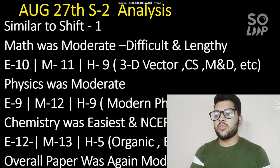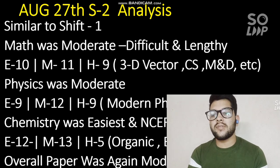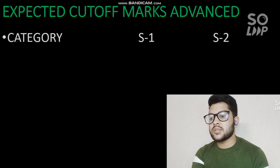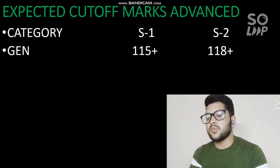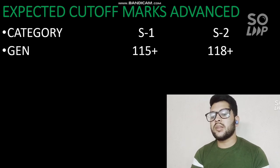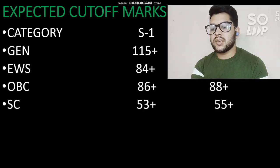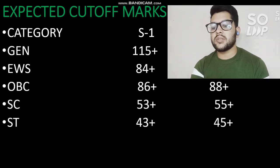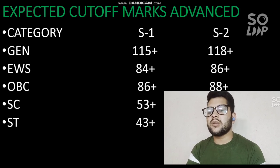Now the expected cutoff marks for JEE Advanced - the minimum marks to be eligible for the JEE Advanced examination on 3rd October. For General category: 115 marks (Shift 1), 118+ marks (Shift 2). For EWS: 84 and 86. For OBC: 86 and 88. For SC: 53 and 55 marks. For ST: 43 and 45 marks. If you are scoring at or above these marks, you should be safe for JEE Advanced eligibility.